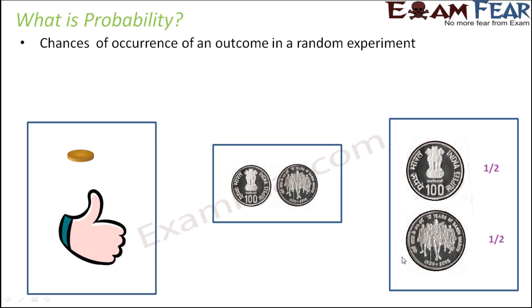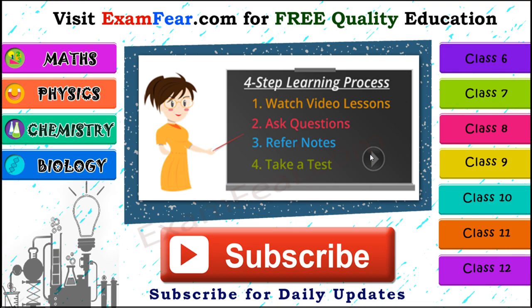So as we see, probability of each head as well as tail is one by two because both of these are equally possible or equally probable. Thank you. Please visit examfear.com for free quality education. You can learn with a simple four-step learning process: watch video lessons, ask your questions, refer notes, and take a free online test. We have content for class 6 to 12 on physics, chemistry, mathematics and biology. Please subscribe to our channel for daily updates.